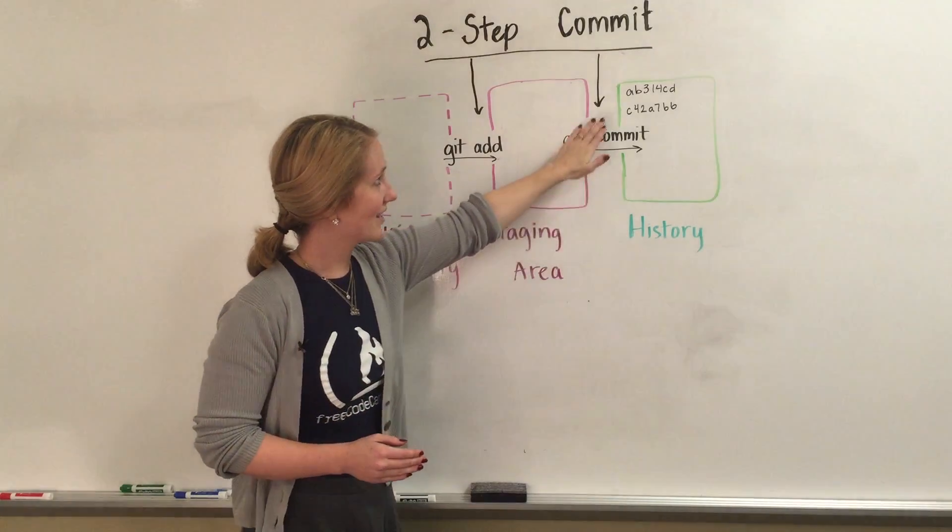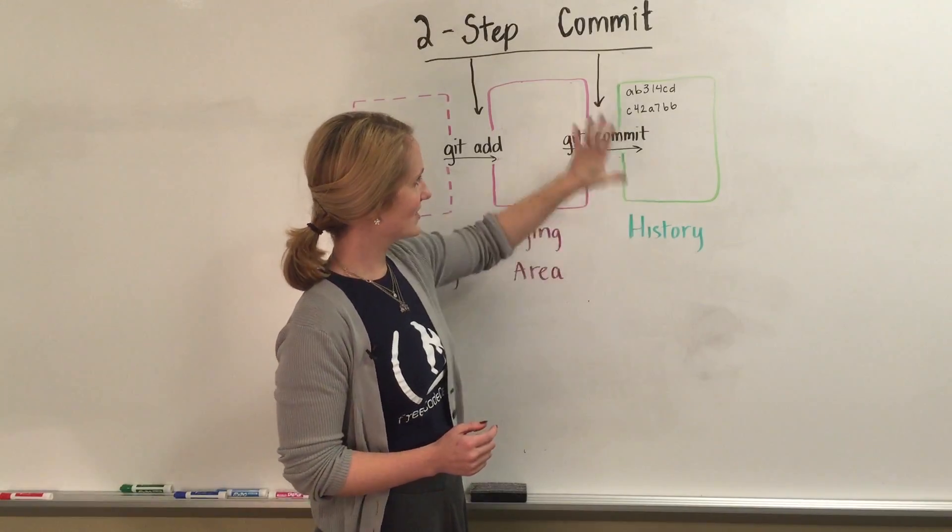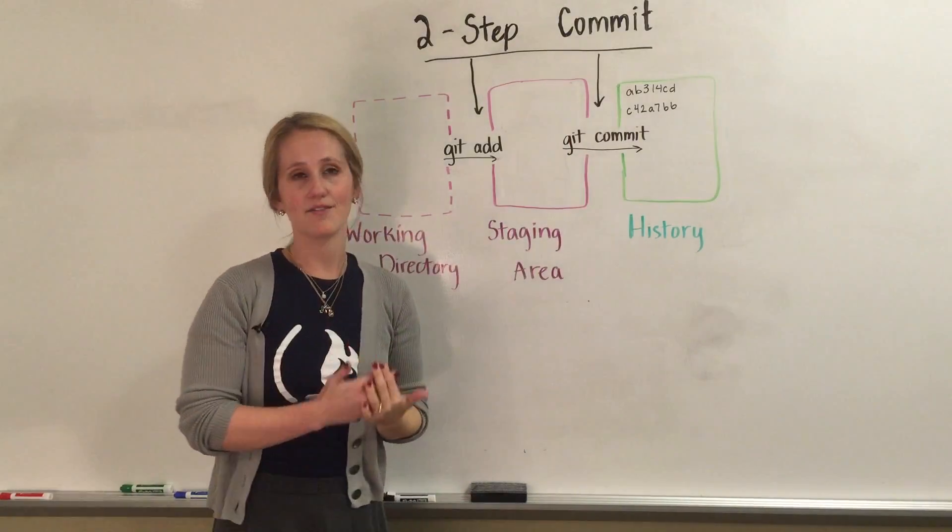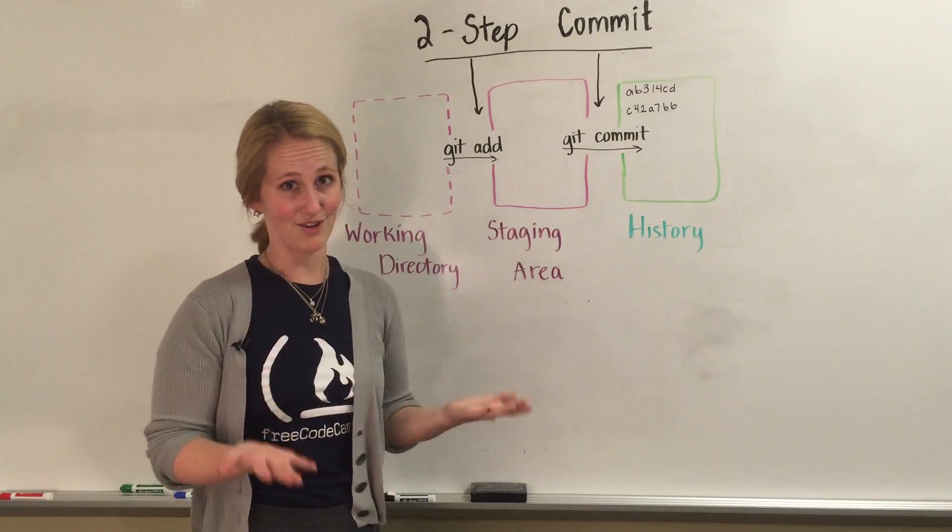Now remember, when we make a commit ID, that is pretty permanent, right? That's in history. So this section over here is our log of commits. It's like a story of all of the changes you've made to put together your code base.